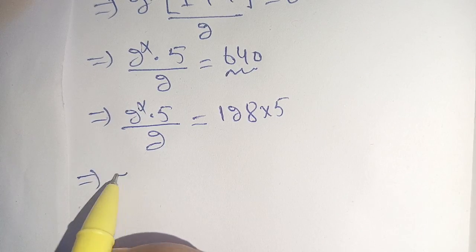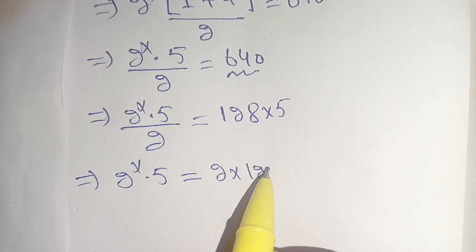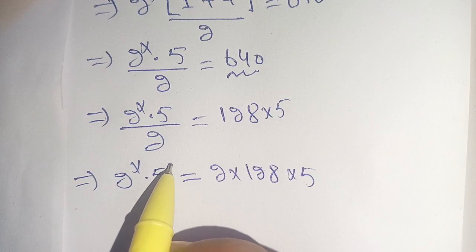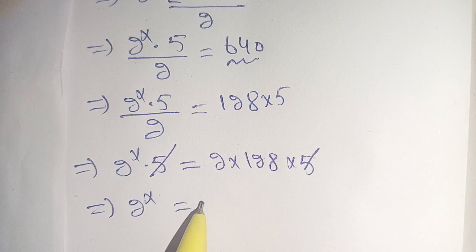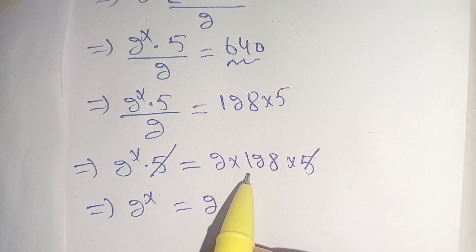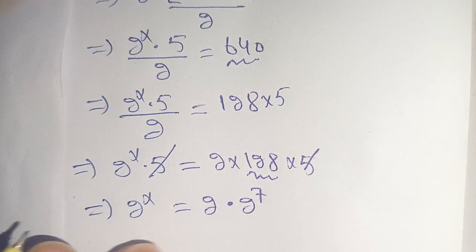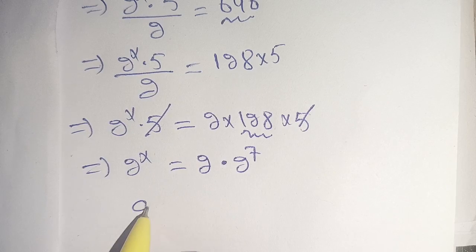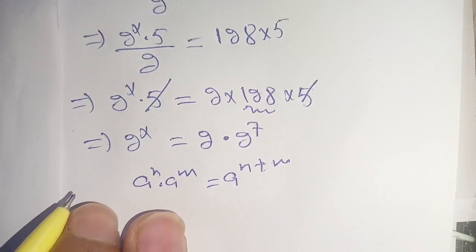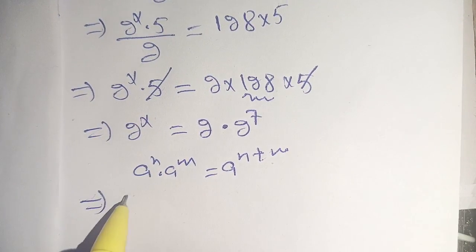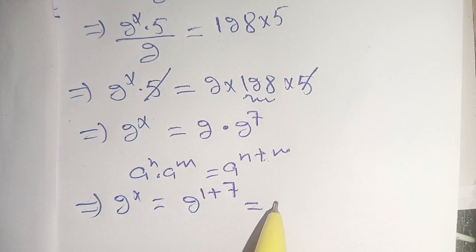Now we can write 2 power x times 5 is equal to 2 times 128 times 5. We cancel out the 5 on both sides and we have 2 power x is equal to 2 times 128, which can be written in terms of 2 as 2 raised to power 7. Using the identity a^n times a^m equals a^(n+m), we get 2 power x is equal to 2 power 1 plus 7, which is 2 power 8.